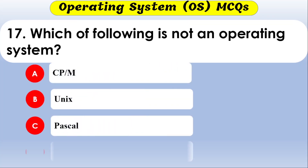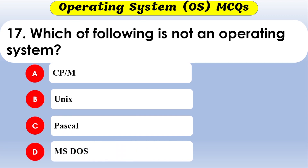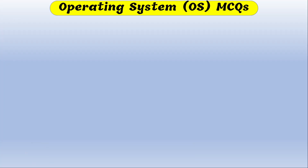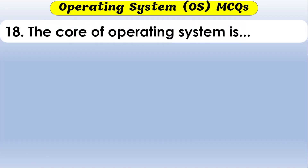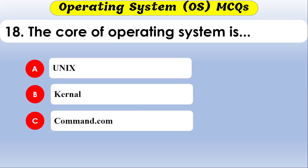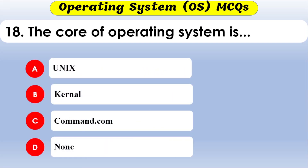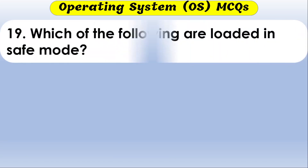Which of the following is not an operating system? The options are CP/M, Unix, Pascal, and MS-DOS. The correct option is Pascal — Pascal is a programming language, not an operating system.